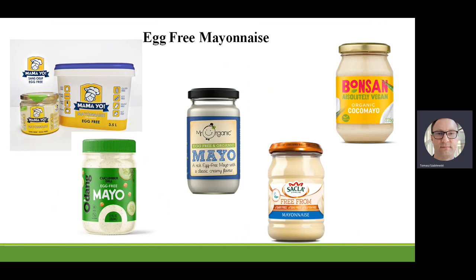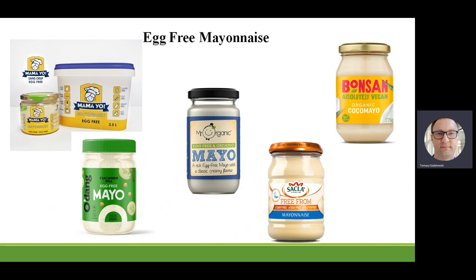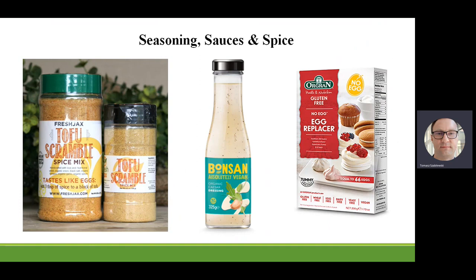Egg-free mayonnaise — we have to use some emulsification process. Absolutely vegan organic cocoa mayo, egg-free mayo with classic creamy flavor — it's not very complicated to build that kind of product. Seasonings, sauces, spices, tofu scrambles, spice mix — this is a premix built from tofu and spices. When we add that kind of flavor and spices, everything will taste like tofu scramble. Also premixes to produce some cupcakes or something like this.